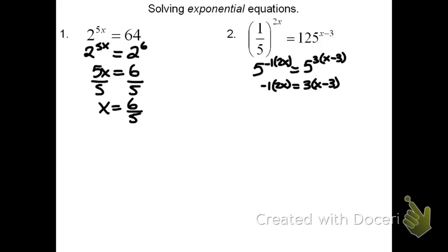To solve this equation, I'm going to have to distribute. The negative 1 times 2x is negative 2x. On the other side, 3 times quantity x minus 3 is 3x minus 9. Now I need to get my variable isolated. This means subtracting 3x from both sides, which gives me negative 5x equals negative 9. And then divide both sides by negative 5. The answer is x equals positive 9 fifths.